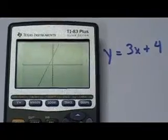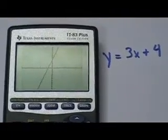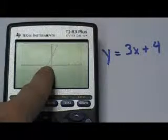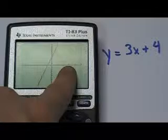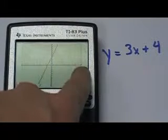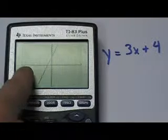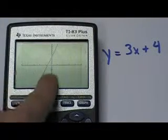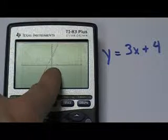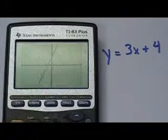Given Y equals 3X plus 4 and this straight line, every tick mark on the X axis represents 2 steps — going 2, 4, 6, 8, 10 in each direction. On the Y axis, we set our scale to 1, so every tick mark is 1 — 1, 2, 3, 4, 5, and so on.